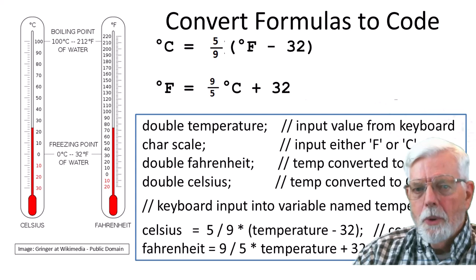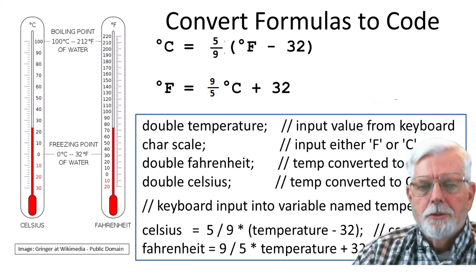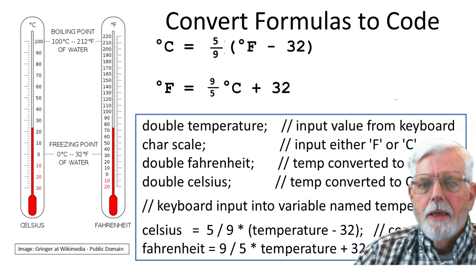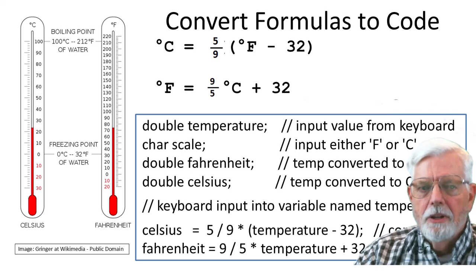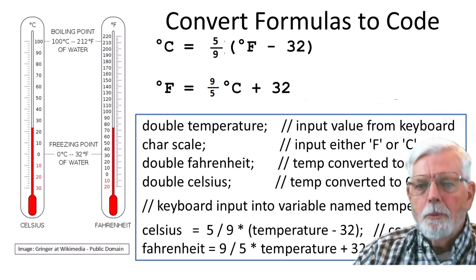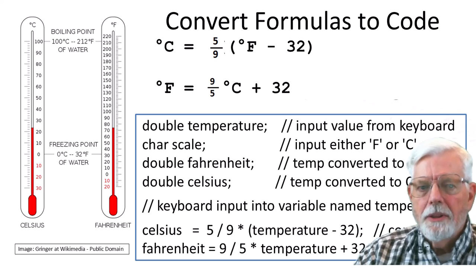Let's convert the formulas that were provided into code. The double data type is being used for variables named temperature, Fahrenheit, and Celsius. The char data type is used for inputting either F or C. Here is a code segment of the program that shows the variable declarations and conversions from Fahrenheit to Celsius and from Celsius to Fahrenheit. Celsius equals 5 divided by 9, then multiplied by the Fahrenheit temperature value from the keyboard minus 32. Multiplication and division have a higher priority than addition and subtraction. We need parentheses because 5 divided by 9 needs multiplied by the full value of the temperature minus 32. Although math formulas assume multiplication in front of parentheses, we need to explicitly use the asterisk symbol to specify multiplication. Fahrenheit equals 9 divided by 5, multiplied by the Celsius value from the keyboard, and then add 32.